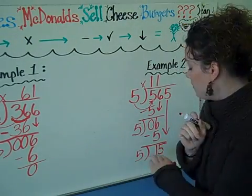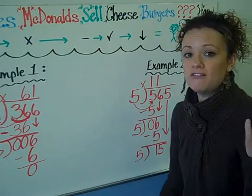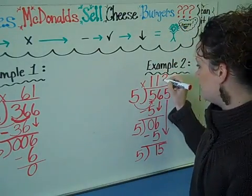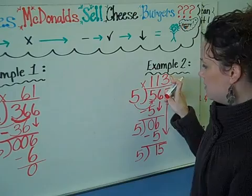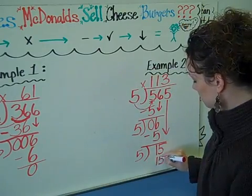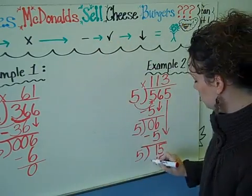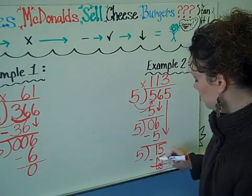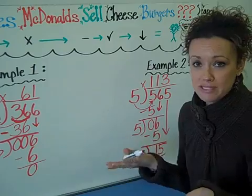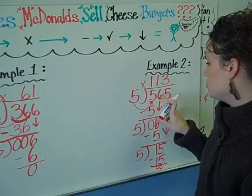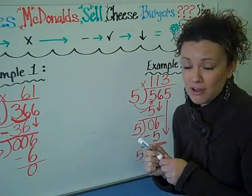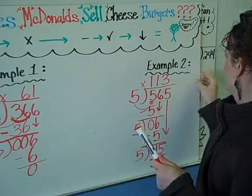My new division problem says 15 divided by five. So you ask yourself, how many times does five go into 15? And it goes in three times. So you put your answer up there. Now we multiply. Three times five is 15. Move on to subtraction. And our answer is zero. We don't have anything else to bring down, so our problem is over now. So 565 divided by five gives us a quotient of 113.